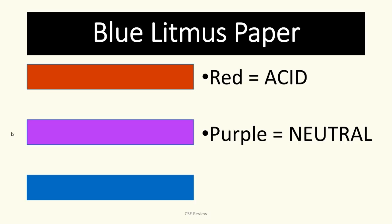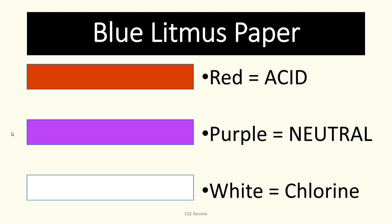If you start with blue litmus paper and after dipping it turns white, that means the substance or gas it was exposed to is chlorine. So to remember the blue litmus results: blue turns red — acid; blue turns purple — neutral; blue turns white — chlorine.